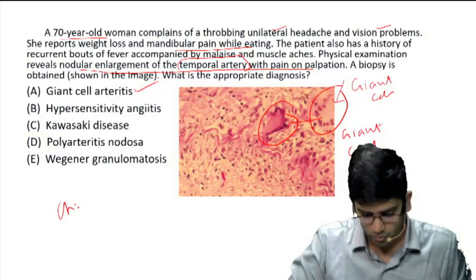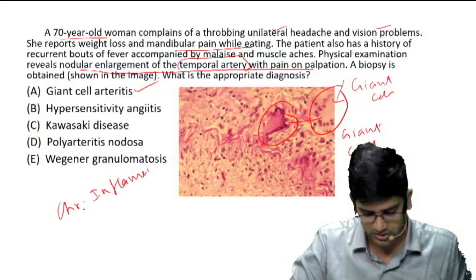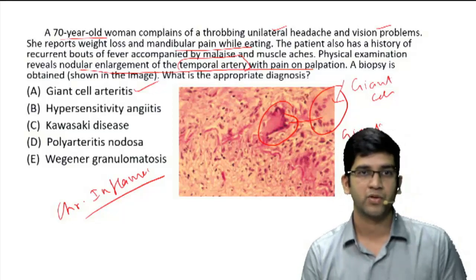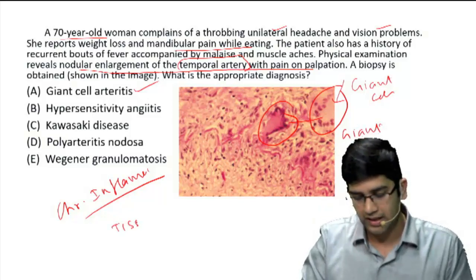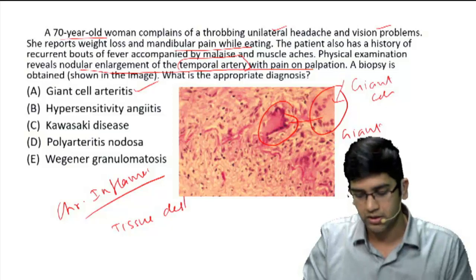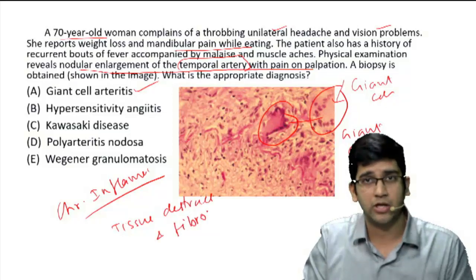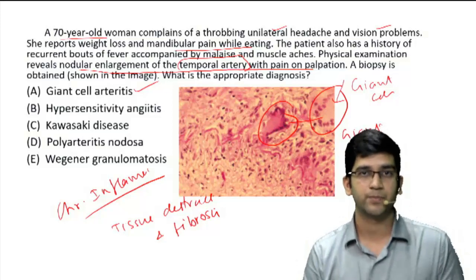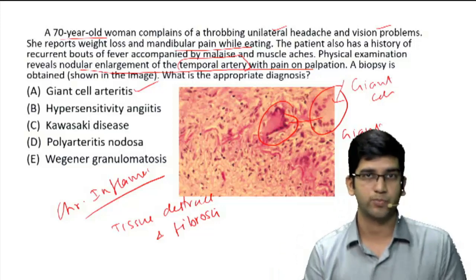We'll understand what giant cell arteritis is. To understand the pathogenesis of giant cell arteritis, we just need to remember it's a chronic inflammatory process. For every chronic inflammatory process in our body, we have only one hallmark: tissue destruction and healing by fibrosis. That's the hallmark of every chronic inflammation. Here also the same thing happens — the temporal artery is going to have tissue destruction and it is going to heal by a fibrous response.